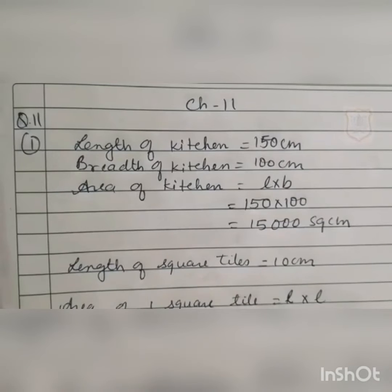The area of the kitchen is 15,000 square cm. Now we will find the area of the tile. The length is 10 cm and the area of a square tile is L into L, that is 10 into 10, we get 100 square cm.